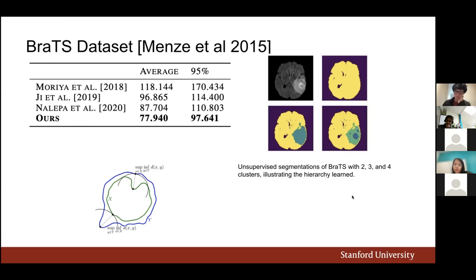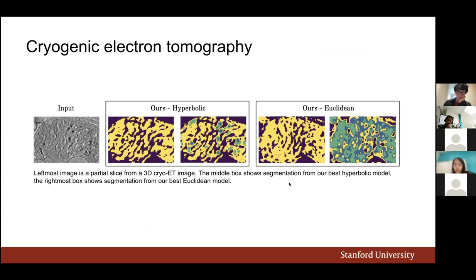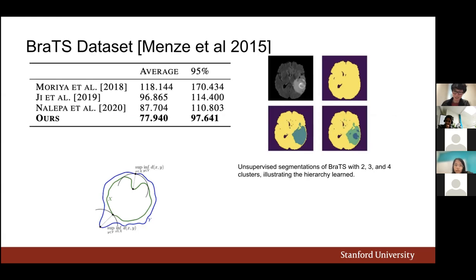A question is raised about cases where the hierarchy overlaps — for example, if two structures overlap in BraTS. Jeffrey says their demonstrations mostly avoid ambiguity to clearly demonstrate the method, but acknowledges this is a great question for future work: if there's overlap or ambiguity, it's unclear how well these methods would work, and practically this will often be the case in real biomedical images.